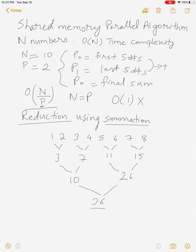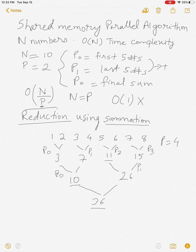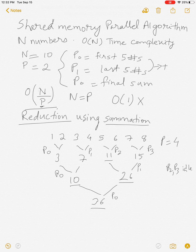This tournament-like structure is very parallelizable. With four processors: P0 adds to get 3, P1 gets 7, P2 gets 11, P3 gets 15. Then P0 produces 10 and P1 produces 26, while P2 and P3 remain idle. Finally P0 adds 10 and 26 to produce 36.